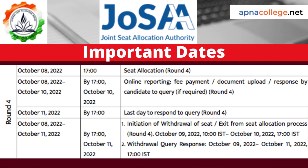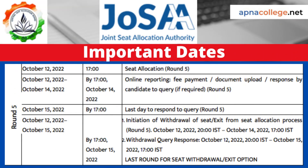For Round 4, online reporting continues over three days: October 8, 9, and 10, by 5 PM. By October 11, 2022 at 5 PM, the candidate must respond to queries. From October 8 till October 11, 2022, candidates can initiate withdrawal or exit from the seat allocation process and respond to withdrawal queries. On October 12, 2022 at 5 PM, the Round 5 seat allocation result for JOSA online counseling 2022 will be displayed.